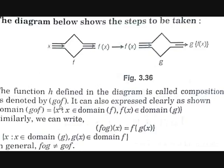The composition is denoted as g∘f of x. It can be expressed clearly as: the domain of g∘f is {x} if x belongs to the domain of f and f of x belongs to the domain of g. Similarly, f∘g of x can be written where x belongs to the domain of g and g of x belongs to the domain of f. In general, f∘g is not equal to g∘f — those two are two different functions.